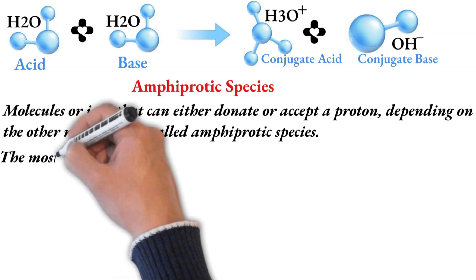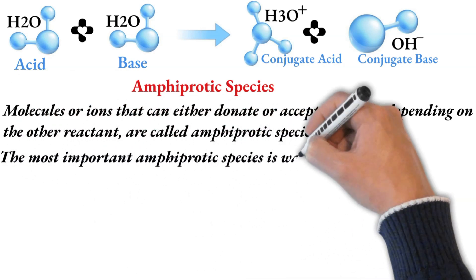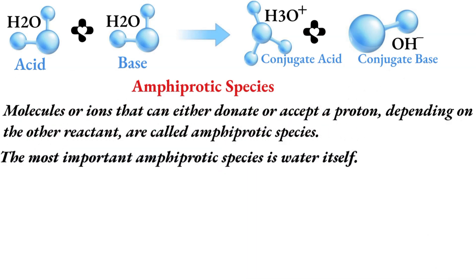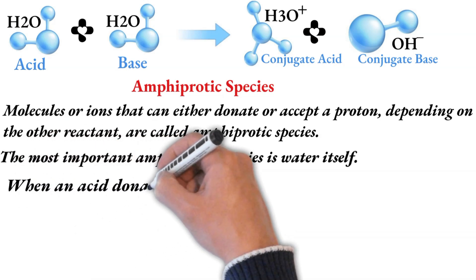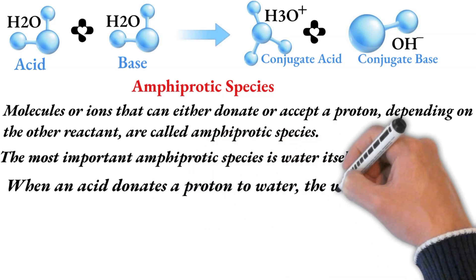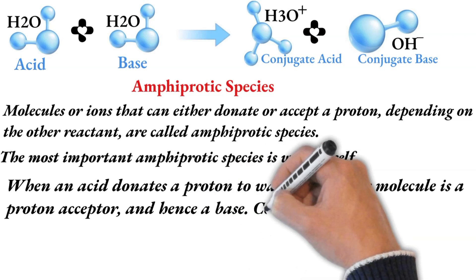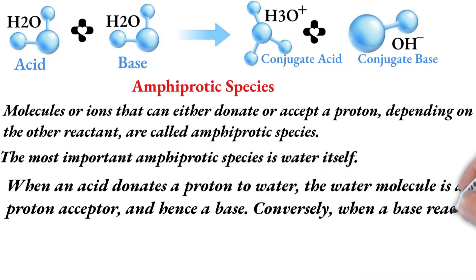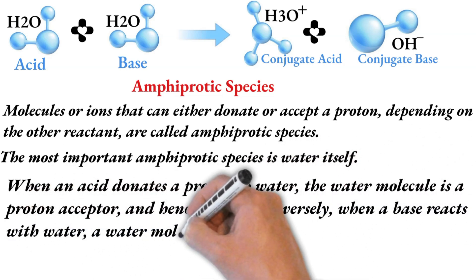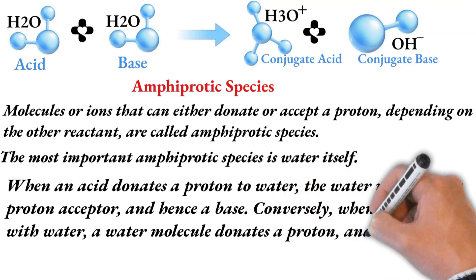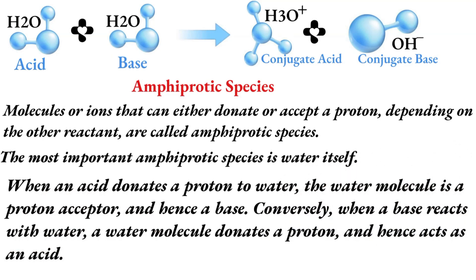The most important amphiprotic species is water itself. Water is an amphiprotic species. When an acid donates a proton to the water, the water is the proton acceptor, which means it acts as a base. Conversely, when a base reacts with water, the water molecule donates a proton, acting as an acid.